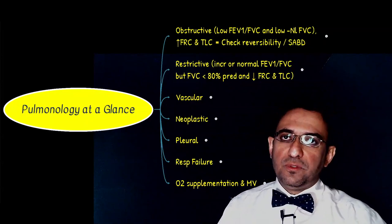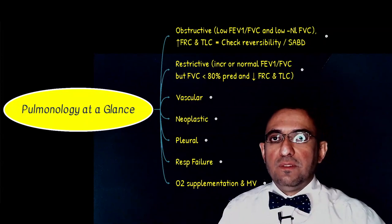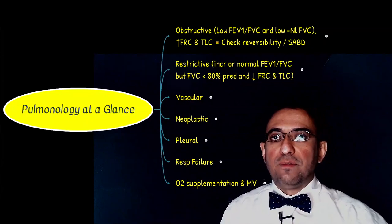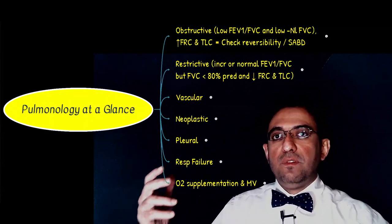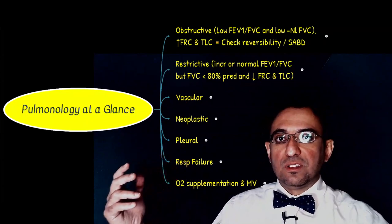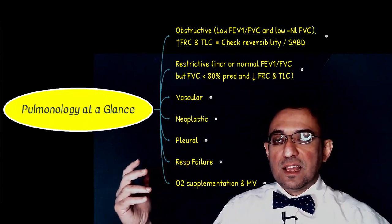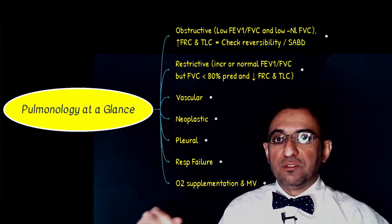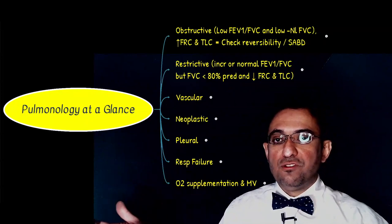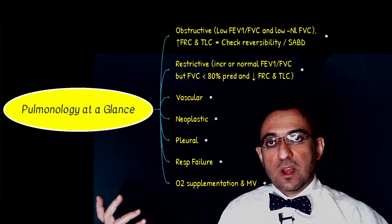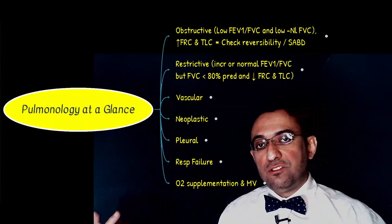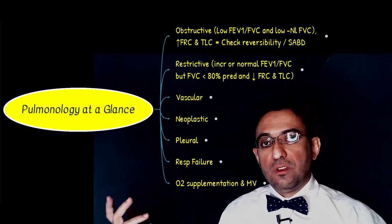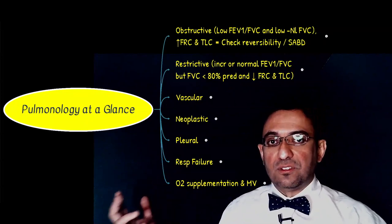Most of us know very well the FEV1 to FVC ratio. We know that the FEV1 to FVC ratio is decreased — that's less than 80% of normal or expected for the patient's age — in obstructive lung disease. While in restrictive lung diseases, the FEV1 to FVC ratio is normal or even increased.